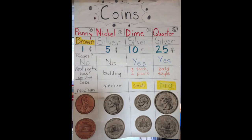We're going to take a look at our coin chart for a quick refresher. At this point, we should be familiar with the four different types of coins. Starting with the penny — it is brown, somewhat looks orange as well, worth one cent, does not have ridges, which means it is smooth on the outside. On the back is a building, and it is a medium-sized coin. Our nickel is silver, worth five cents, also smooth on the outside with no ridges, a building on the back, and is a medium-sized coin similar to a penny.